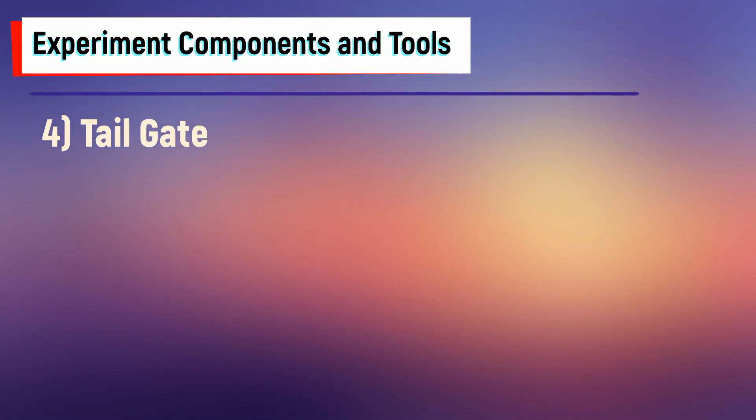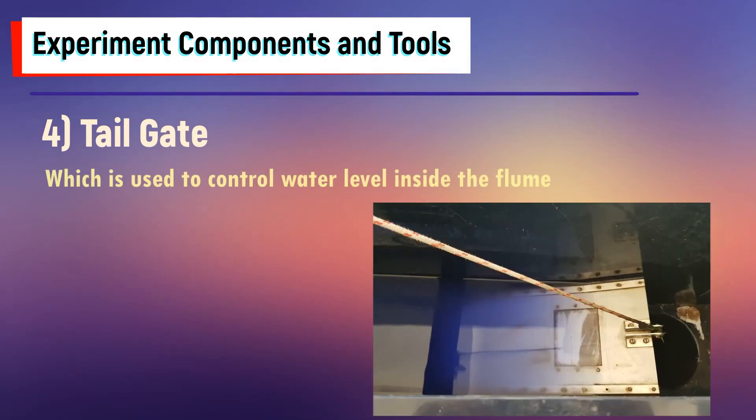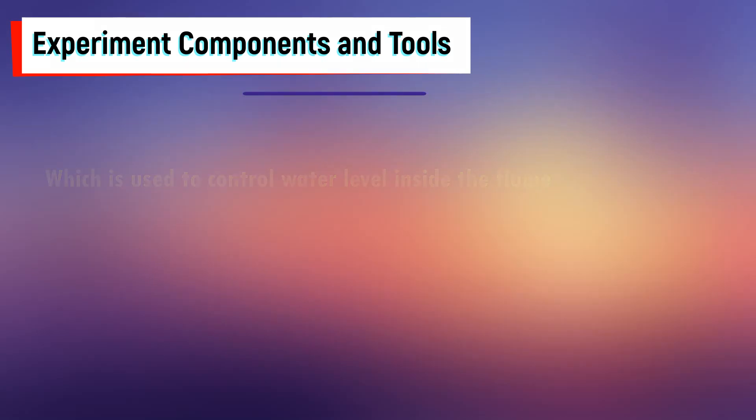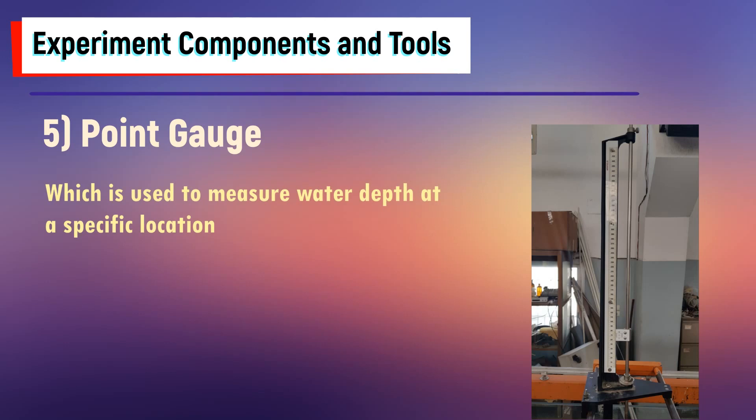Number four, the tailgate which is used to control water level inside the flume. Number five, the point gauge which is used to measure water depth at a specific location.